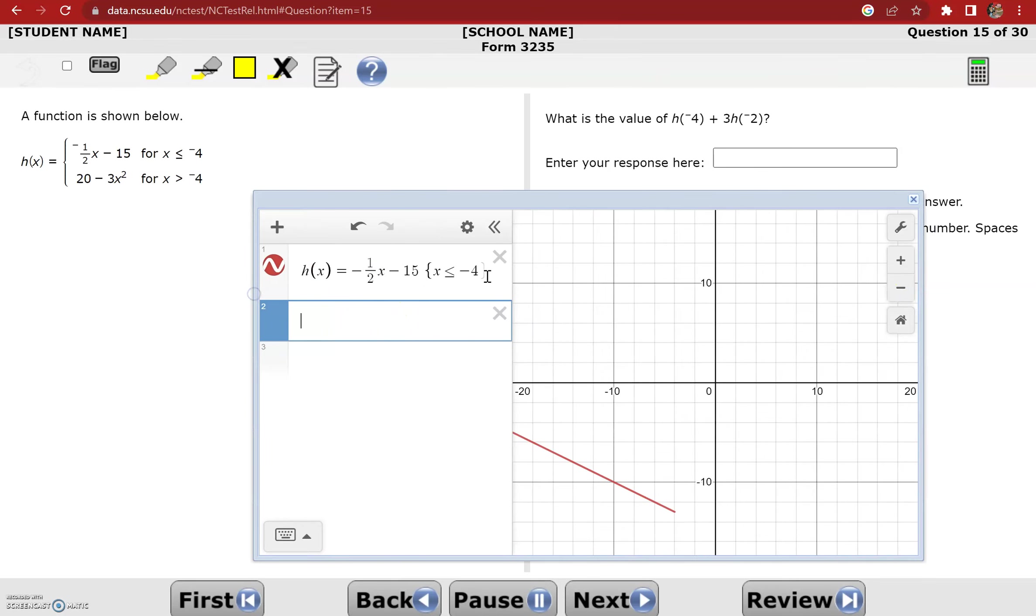I'm going to expand it a little bit more so you can see everything. Now I can graph the second part of the sub-function, 20 minus 3x squared, and that's when x is greater than negative 4. So this is what my piecewise function looks like on a graph. To find h of negative 4, I can just scroll on the graph until I get to negative 4. When x is negative 4, the h value is negative 13. So I know that the first part is going to be negative 13. So I'll make a note of that here.